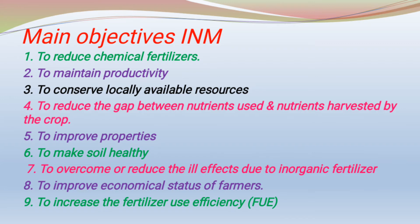Another objective is to improve the economical status of the farmer and to increase fertilizer use efficiency. Fertilizer use efficiency means applying fertilizer at the right time, right place, and right method. For example, with a 100 kg NPK dose, nitrogen may be applied 50% at basal application and the remaining 50% during other interculture operations, improving nutrient use efficiency.